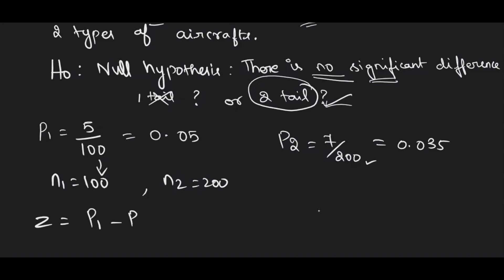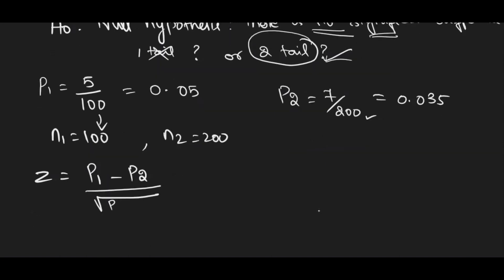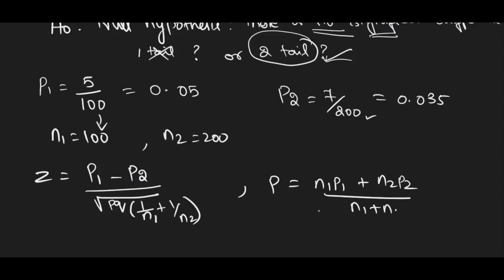The formula for Z is: Z = (p1 − p2) / √(pq × (1/n1 + 1/n2)). Now, what is this combined proportion p?